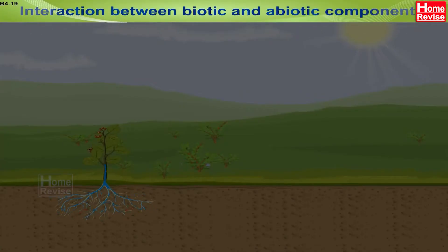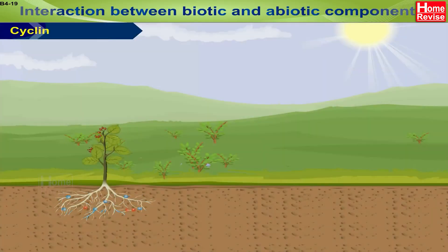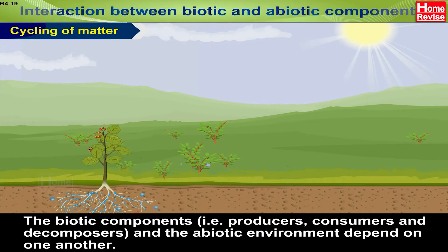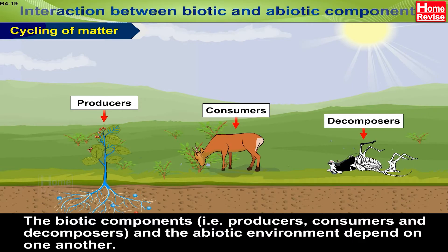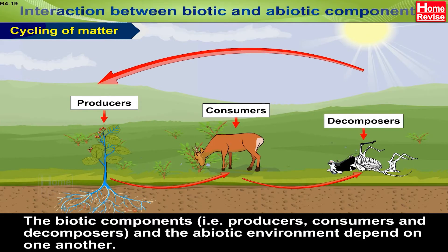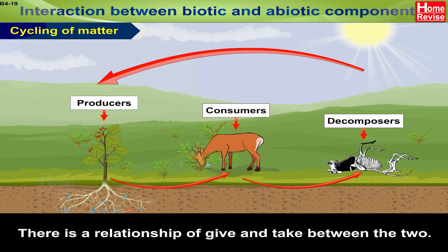Interaction between Biotic and Abiotic Components — Cycling of Matter. The biotic components, i.e. producers, consumers and decomposers, and the abiotic environment depend on one another. There is a relationship of give and take between the two.